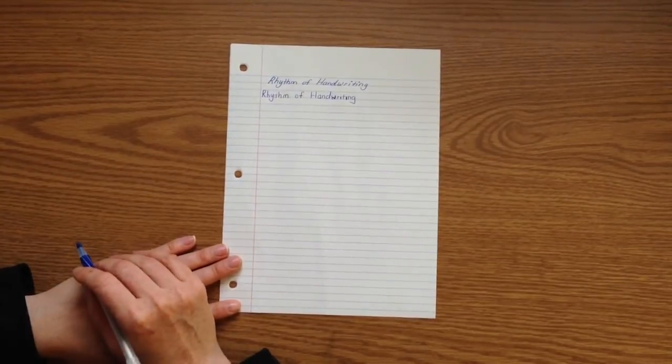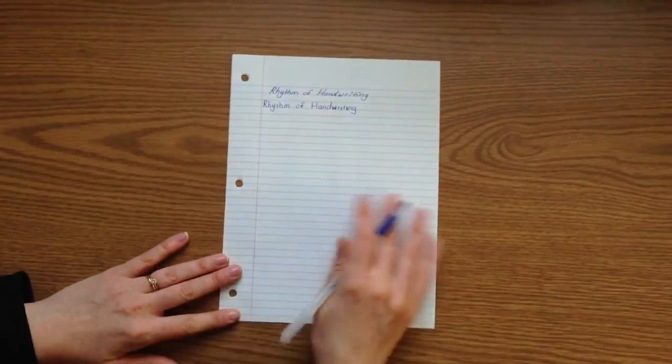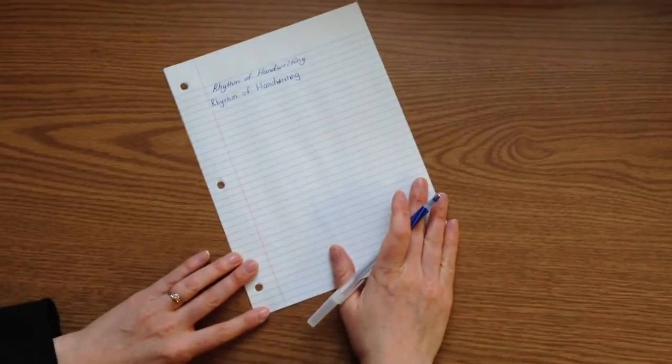The reason has to do with ergonomics and what is actually simpler to write. Slanted writing is simpler because slanted writing is written with the paper at an angle.